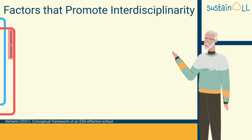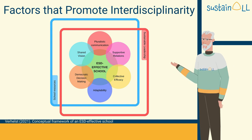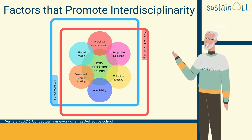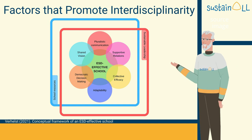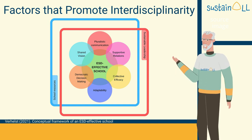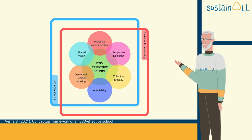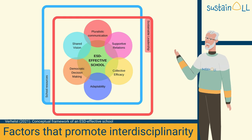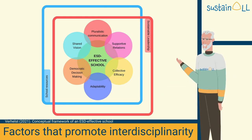Some authors have focused on school characteristics that facilitate the effectiveness of ESD, considering aspects such as sustainable leadership, school resources, pluralistic communication, supportive relations, collective efficacy, adaptability, democratic decision-making, and shared vision. Some of these key elements are pivotal to promoting interdisciplinary work. Let us approach each one in more detail.